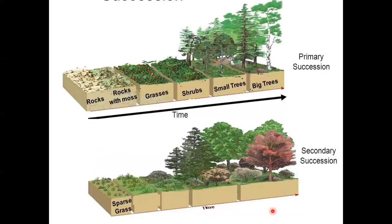Succession. There are two types of succession: primary and secondary. There is one big difference between these two. With primary succession, you're talking about an ecological event that brings us down to bare rock — a good example being a volcano. When a volcano happens, it covers the land with lava, essentially a form of rock.